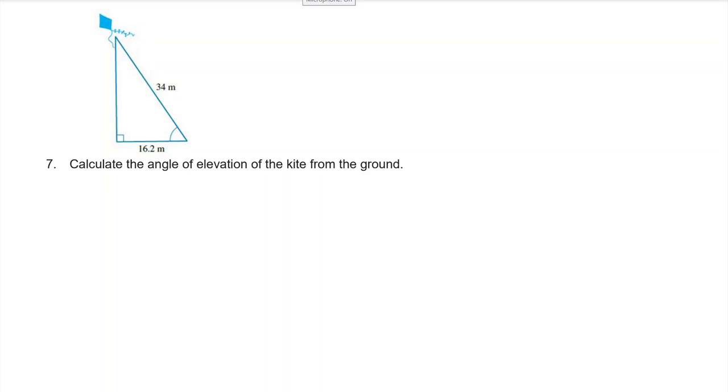On to question 7. It says calculate the angle of elevation of the kite from the ground. You're looking for the angle of elevation which is that part there, and so we know we've got to use trigonometry to figure that out.